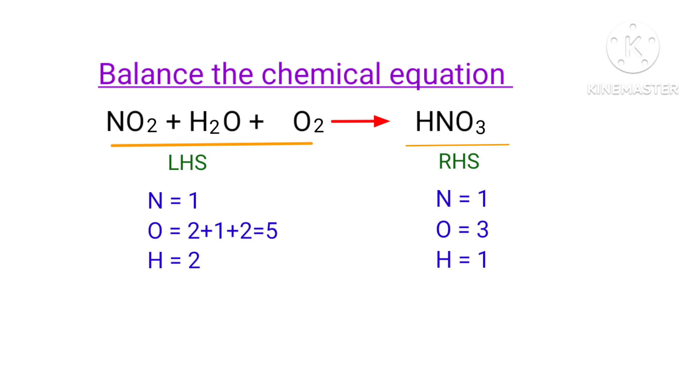The number of atoms are not balanced on both sides. To balance the chemical equation, we need to make use of coefficients. A coefficient is a number that we place in front of a chemical formula.